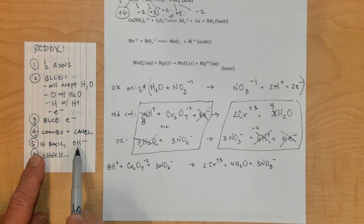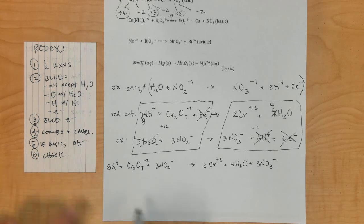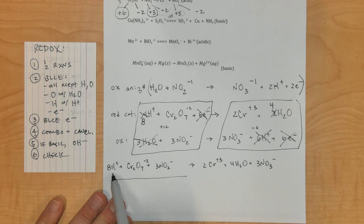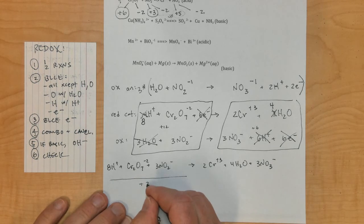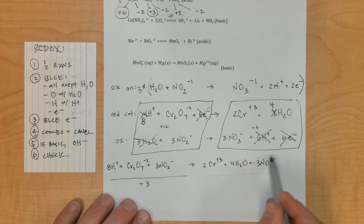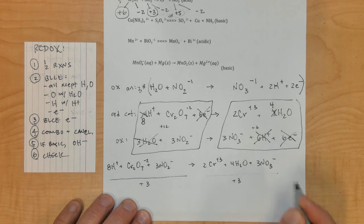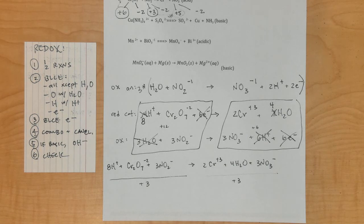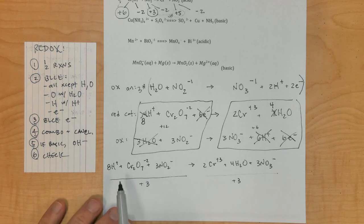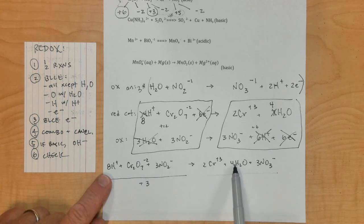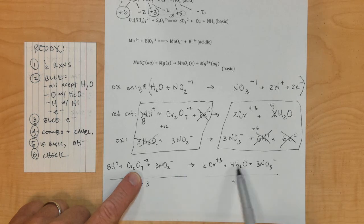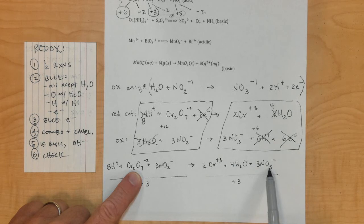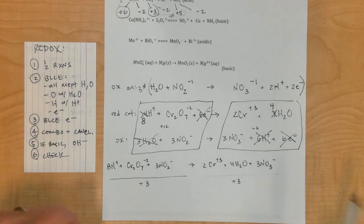My last step is if it's in basic, add OH minuses, but it's not. It's in acidic solution, so check. My total charge on this side is positive 8 plus negative 2 plus negative 3, giving me positive 3. On this side, I have negative 3 and positive 6, giving me positive 3. My charge is balanced. Then check for mass: 8 hydrogens, 2 chromiums, 7 plus 6 gives 13 oxygens equals 4 plus 9 equals 13 oxygens, and 3 nitrogens balanced.